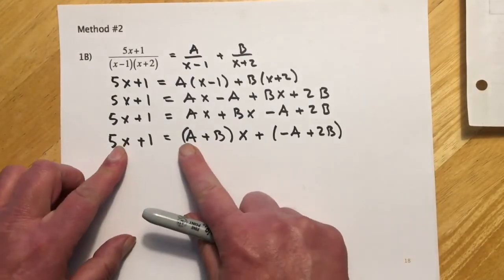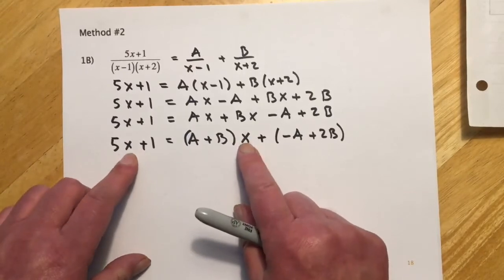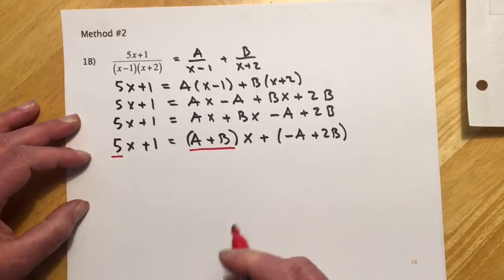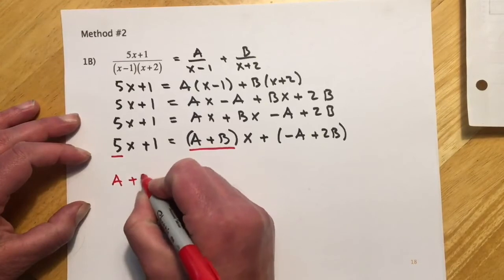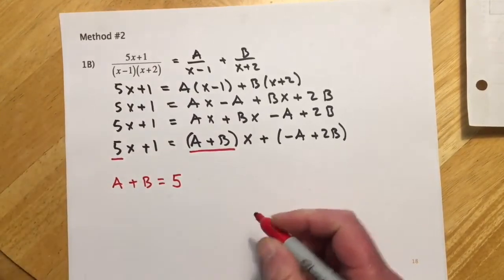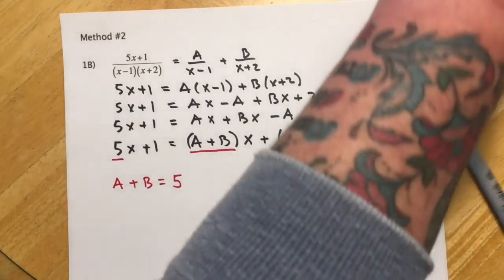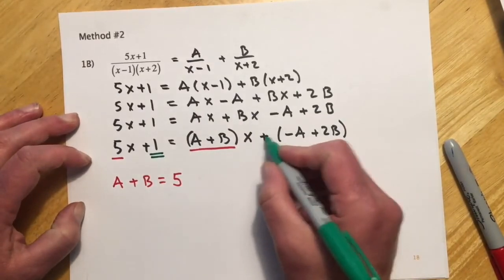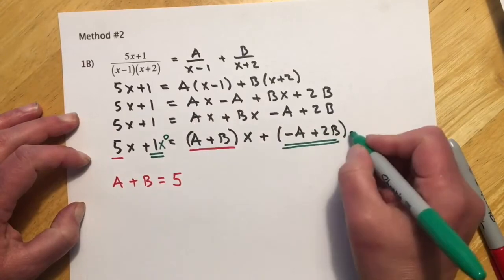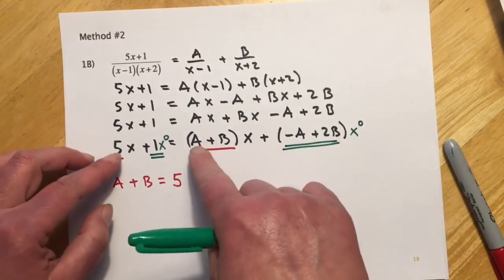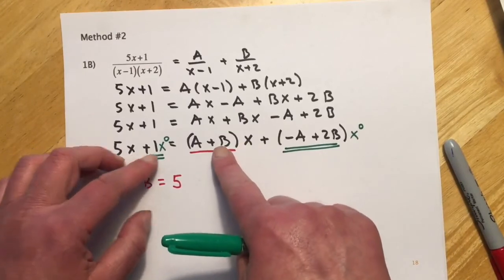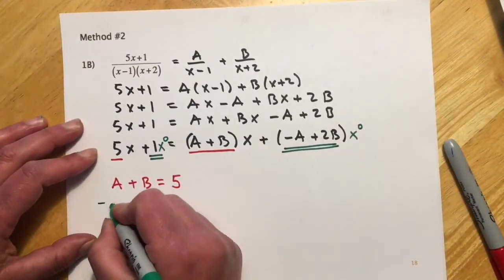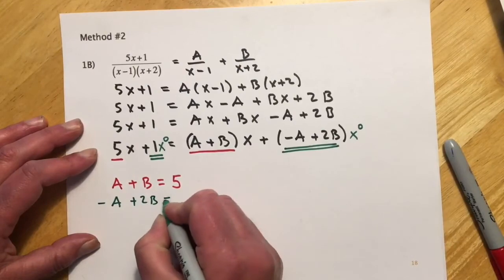So the 5x goes with the (A+B)x. So these are both the x terms, the linear terms. So what that means is the 5 has to equal that A+B. So then I can go A+B equals 5. And then the 1, so it has to equal all that stuff. And we can think of this as x to the 0, x to the 0. So we're just saying the 5 goes with the x coefficients, and then the 1 goes with the x to the 0 coefficients. And so this would just look like -A+2B equals 1.